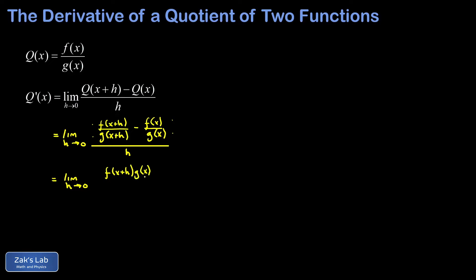That creates a denominator of g of x times g of x plus h, and then we can subtract straight across. At the same time, we divide that fraction by h, which just puts an h into its denominator. So multiplying the first fraction by g of x over g of x gives us a term that looks like f of x plus h times g of x. In the second fraction, multiplying the top and bottom by g of x plus h gives us f of x times g of x plus h. The denominator is g of x times g of x plus h, and we have to divide the whole thing by h.